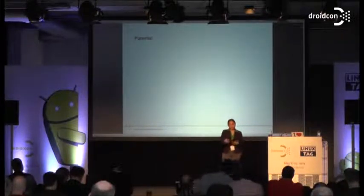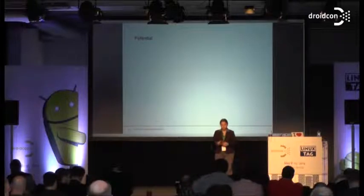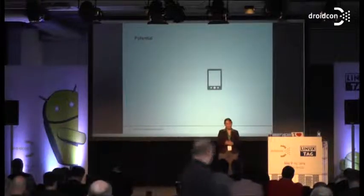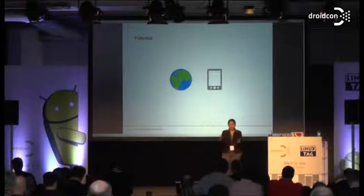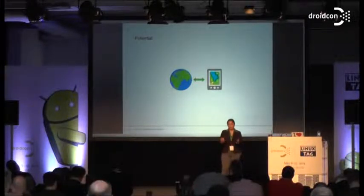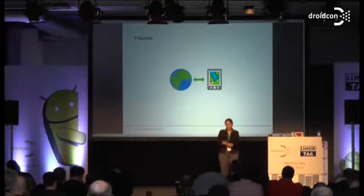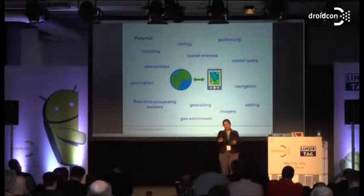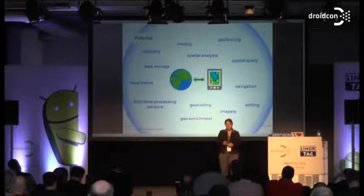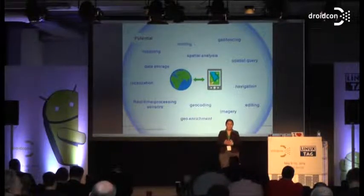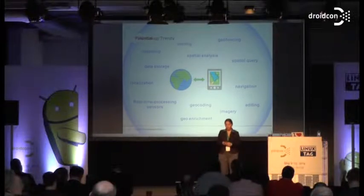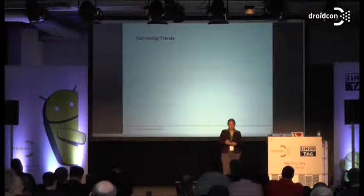So these were some examples of the potential we have. We have a mobile device, the world, and location. How could we use our location on the device, enrich our apps, and add mobile mapping to our normal applications? We have all these geo-tasks we can use and different degrees of customization. Most people only use localization, but spatial analysis is very important for software applications in the world.